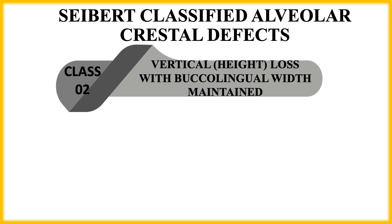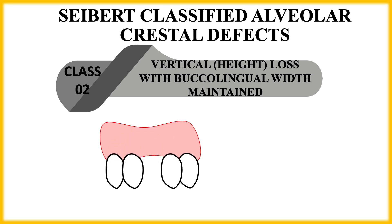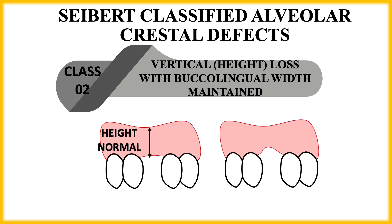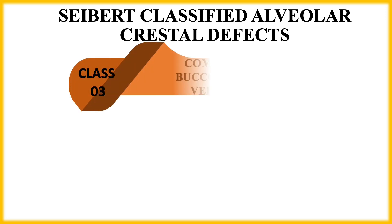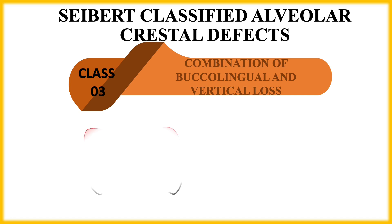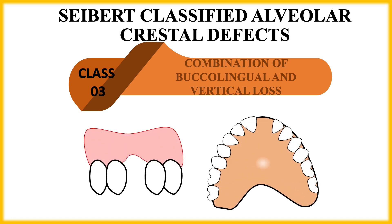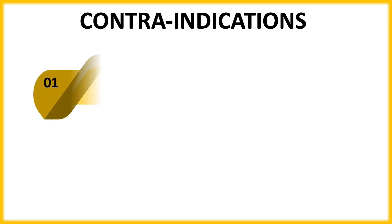Siebert Class II is the classic example for Andrew's Bridge, where there is loss in height but the width is maintained. In such cases, Andrew's Bridge is given to provide lip support and maintain aesthetics. Siebert Class III is a combination of both — there is loss in both height and width.